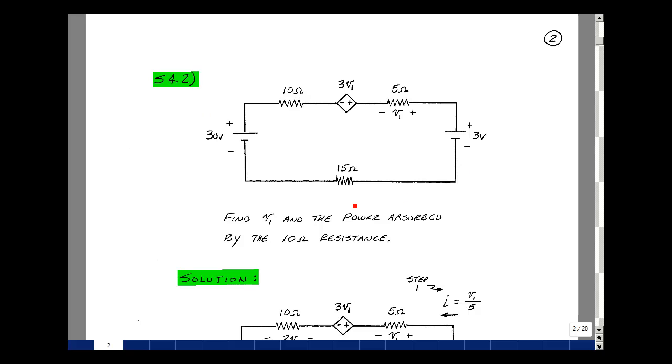Given this circuit, which contains two independent sources, three resistances, and one voltage-controlled voltage source, can you solve for the voltage V1 and the power absorbed by this 10 ohm resistance?